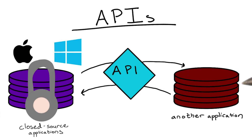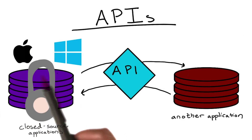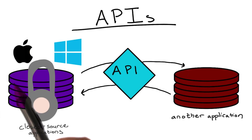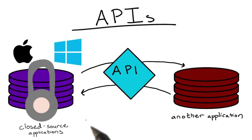APIs are a great way for controlling the exposure of code, allowing internal functionalities of an application to be used from the outside world without exposing all of the internal code. Companies that want to keep their code bases private, like the makers of Microsoft Windows or Mac OS X, use APIs to make it possible for their applications to still have interactions with other applications, without having to reveal the actual code.